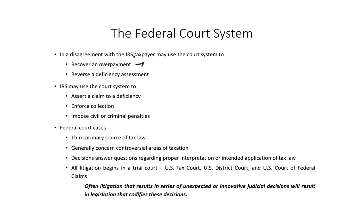The taxpayer can either pay the tax and then sue for a refund — recovering an overpayment — or the taxpayer can go through the tax court system with the statutory notice period, the 90-day period. They get a 90-day letter and then can go to tax court without paying. Then the tax court rules, and payment would be required if they lose. We're going to find there are three different courts of original jurisdiction where a taxpayer can start. Original jurisdiction means where the case starts — the original trial court level, not the appeals.